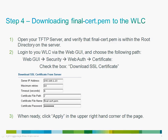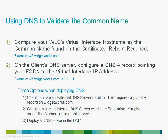In step 4, we download the final-cert.pem file to the wireless controller. Open your TFTP server and make sure the file is in the root directory. Log into the WLC via the web GUI, go to the Security tab, choose Web Auth, then Certificate. Check the box that says Download SSL Certificate and you'll see prompts below. Enter the IP address of the server, leave maximum retries and timeouts at defaults, include the file path — if using the root of the TFTP server, that's simply a forward slash — then enter the file name and the certificate password from the pass-in/pass-out step. Choose Apply in the top right-hand corner to begin the installation process.